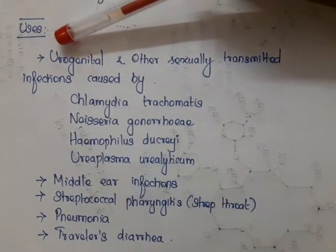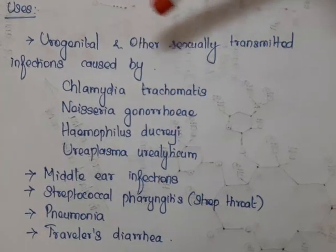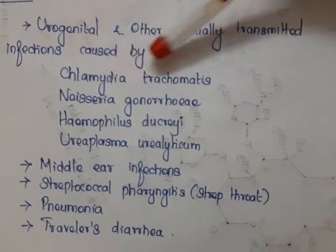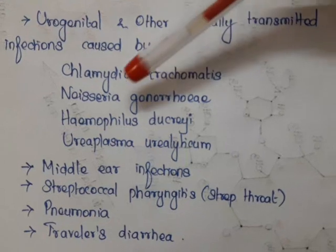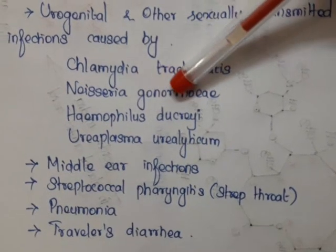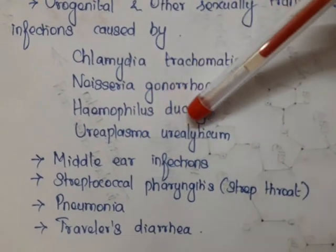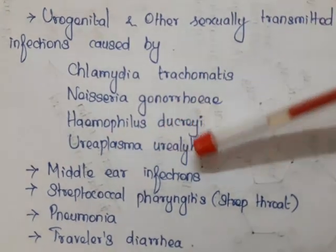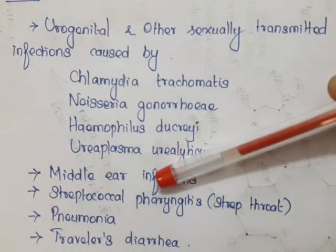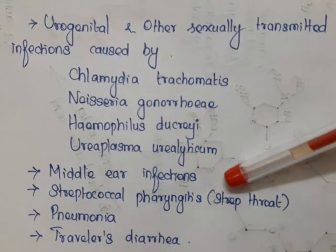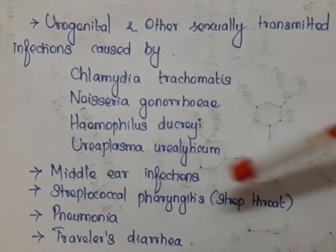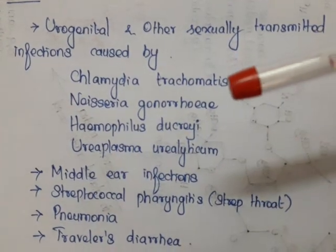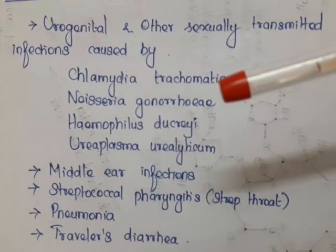Uses of azithromycin: used in the treatment of urogenital and other sexually transmitted infections caused by Chlamydia trachomatis, Neisseria gonorrhoeae, Haemophilus ducreyi, and Ureaplasma urealyticum; and in the treatment of mild ear infections, streptococcal pharyngitis (strep throat), pneumonia, and traveler's diarrhea.